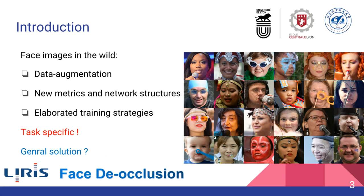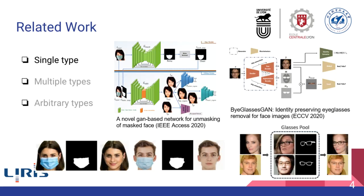Occlusions are very common in face images in the wild, which harms face-related computer vision tasks. To address this issue, some task-specific methods are proposed with mid-grade success. A relatively more general solution would be de-occluding face images before passing them onto downstream tasks. Some methods can only remove one kind of face occlusion, such as masks or eyeglasses.